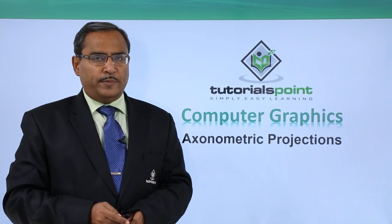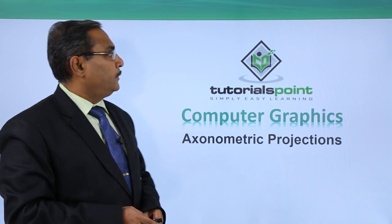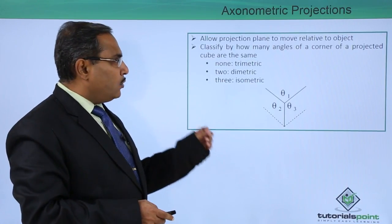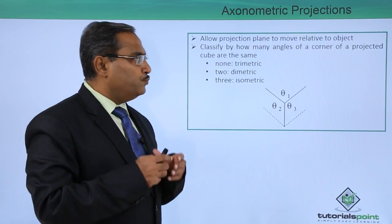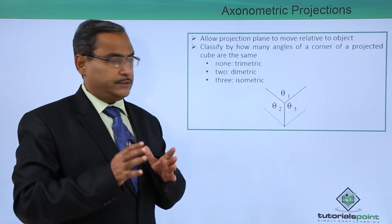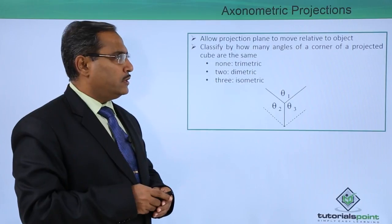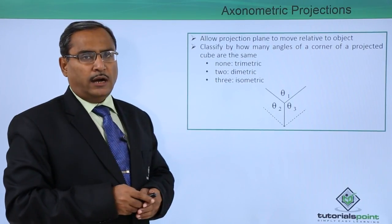We are going to discuss axonometric projections. In case of axonometric projections, it allows projection plane to move relative to the object and classify by how many angles of a corner of a projected cube are the same.